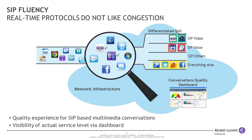SIP fluency is another standard feature of our switches. More and more applications use SIP to set up sessions, but they're not all treated equally — voice has different delay characteristics than video, and SIP data sharing is another thing. As a standard feature, our switches can look inside various SIP flows and treat them differently, and also provide dashboarding at the OmniVista level so you can see how each individual application is performing.